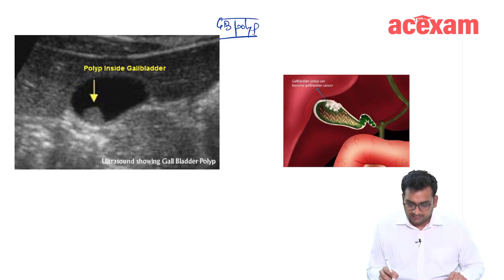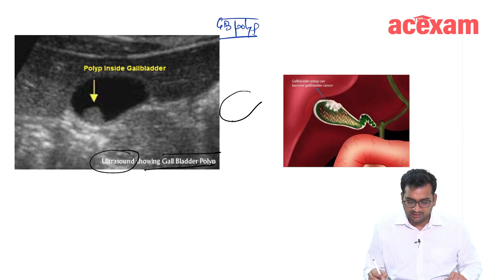This is the ultrasound showing gallbladder polyp. You can see here, there is a gallbladder and there is a polyp which is growing inside. This is polyp inside gallbladder.